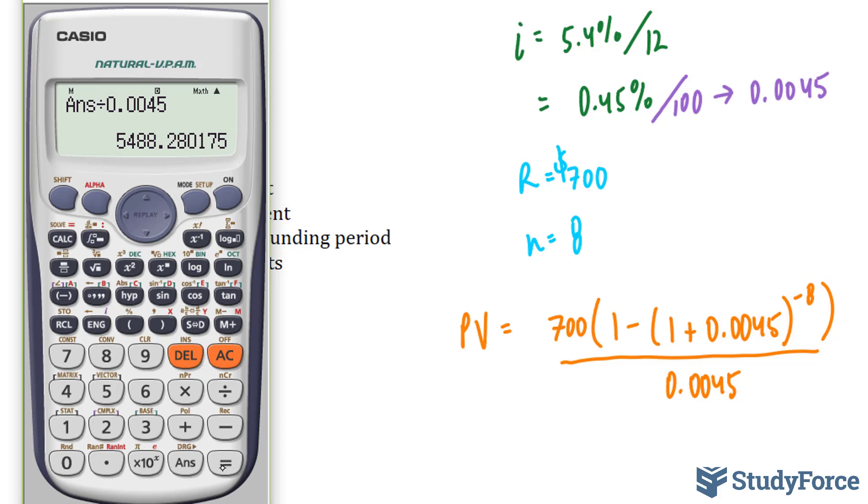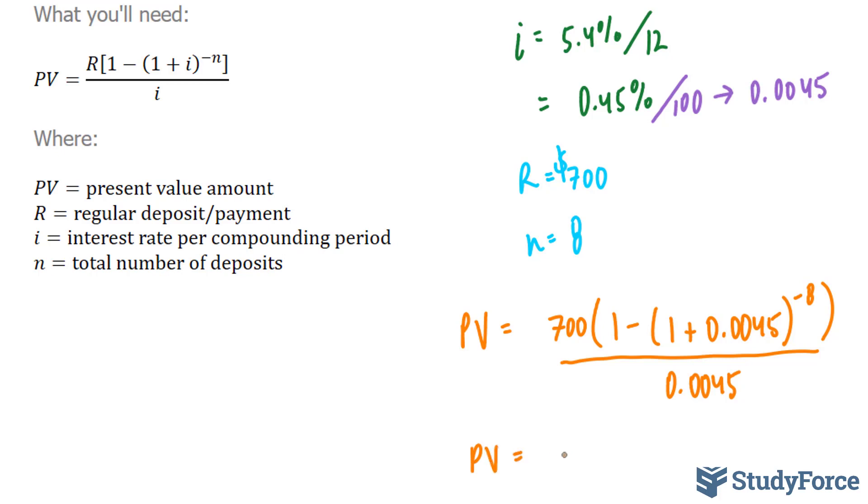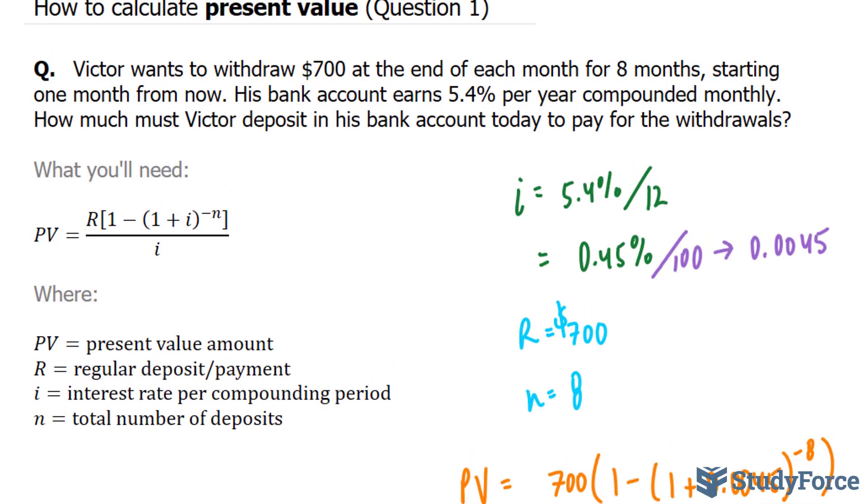So let's write this number down and interpret it next. So our PV is equal to $5,488.28. So what does this mean for Victor? This means that his principal or present value must be equal to $5,488 and some change in order to pay for the withdrawals.